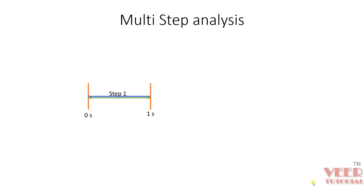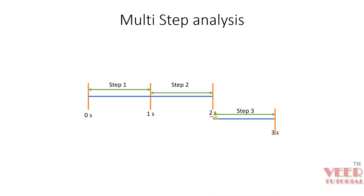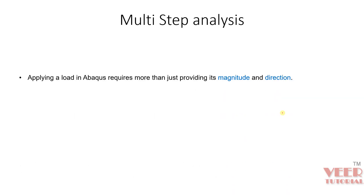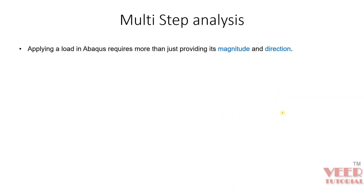So let's say we have step 1 from 0 to 1 second, followed by step 2 up to 2 seconds, and we can have multiple steps — let's say the next step is up to 3 seconds. When you go through multi-step analysis, it is not only about providing magnitude and direction for the load; we also need to provide some more parameters.